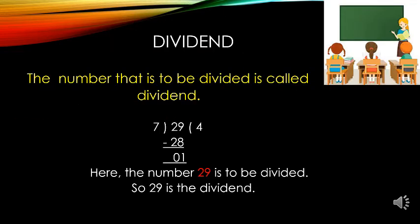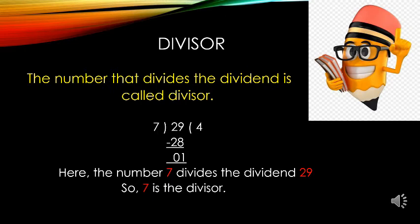Now let us understand what is dividend. The number 29 is the dividend — it is the number to be divided. Now let us understand what is divisor. The number that divides the dividend is called the divisor. Here, the number 7 divides the dividend 29, so 7 is the divisor.